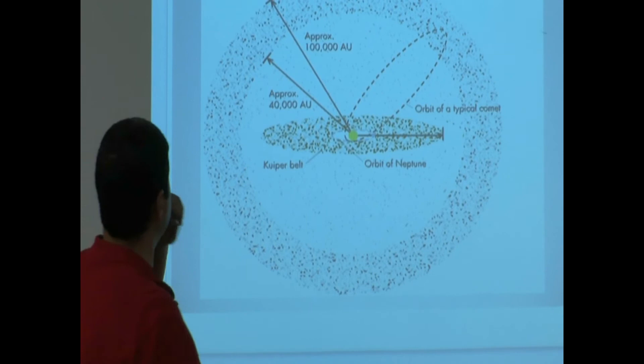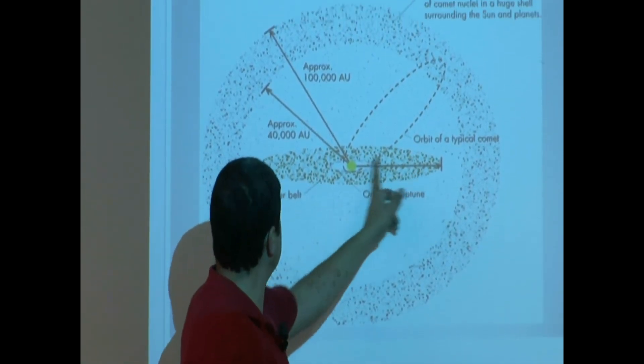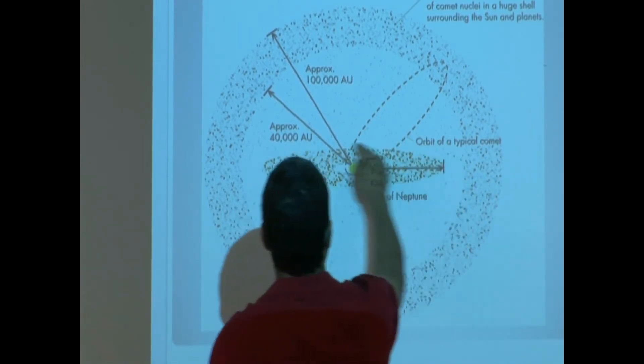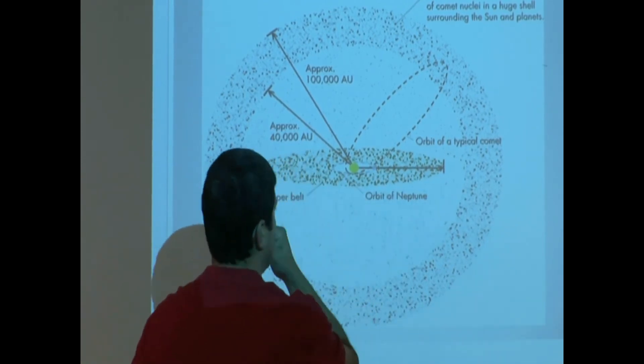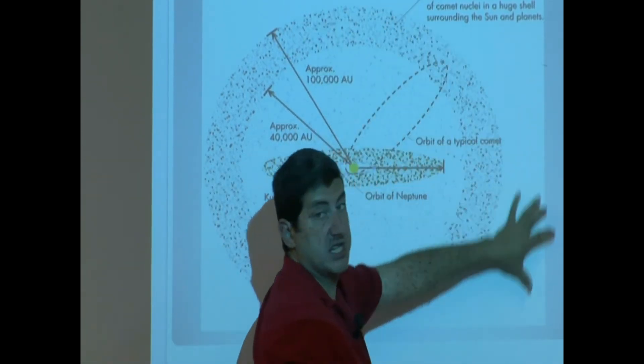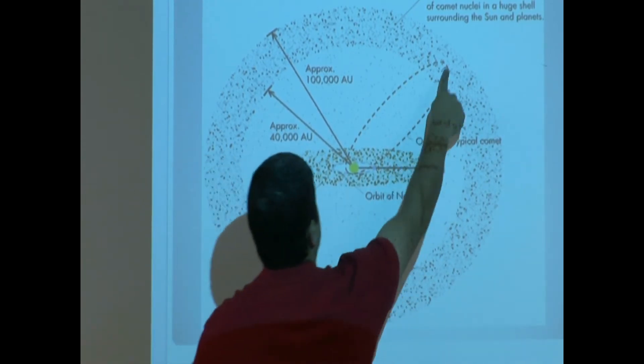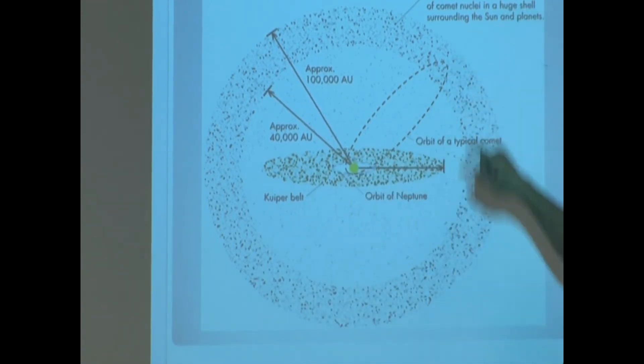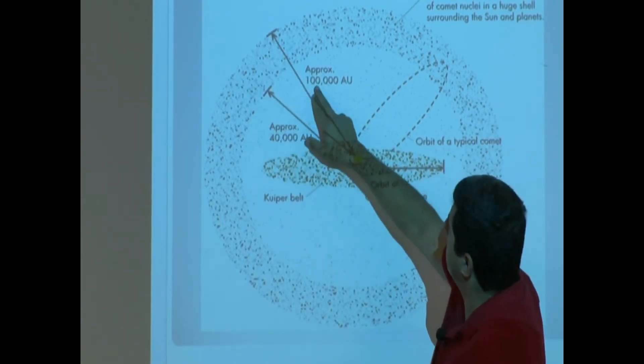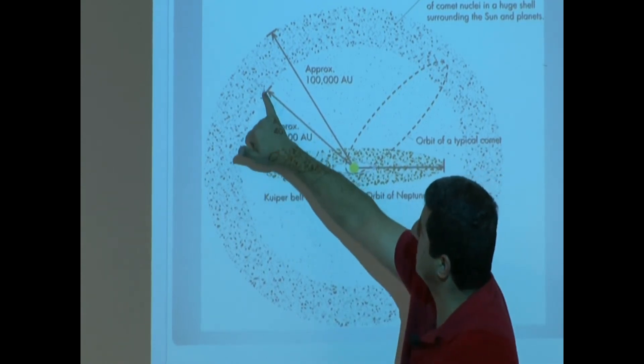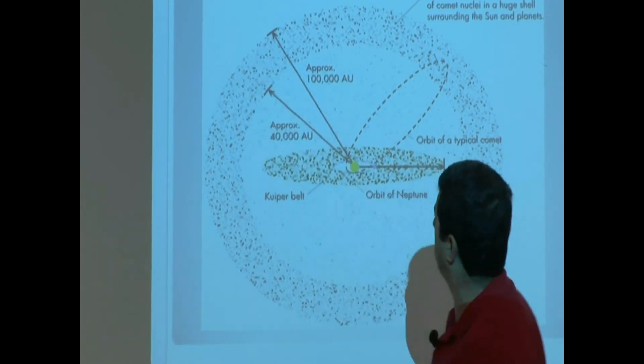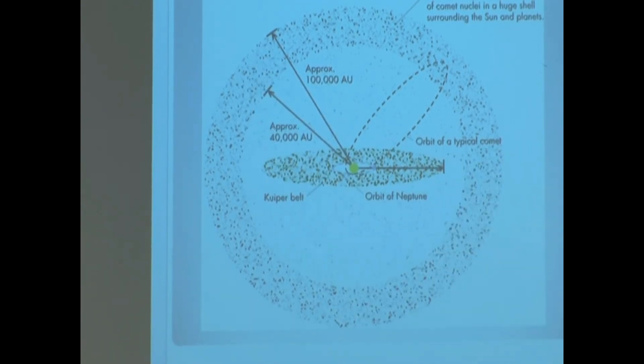So this gives us a visual. You see here, this is the Kuiper Belt. You see how the Kuiper Belt is more or less the same orbit as the Earth's, and the comets that come from there go this way. But the Oort cloud is spherical. The comets that come from there, they come this way. So it says, Oort cloud, a swarm of trillions of comet nuclei in a huge shell surrounding the sun and planets. The distance from here to here, approximately 100,000 AU. The distance from here to the inner Oort cloud, 40,000 AU.